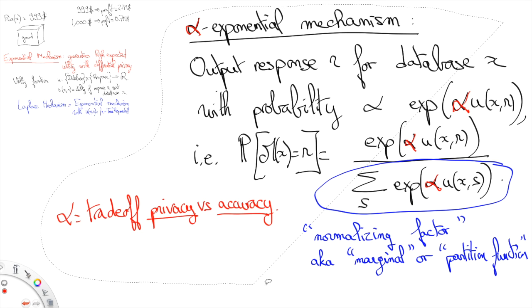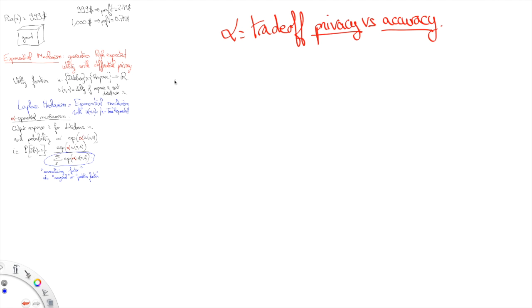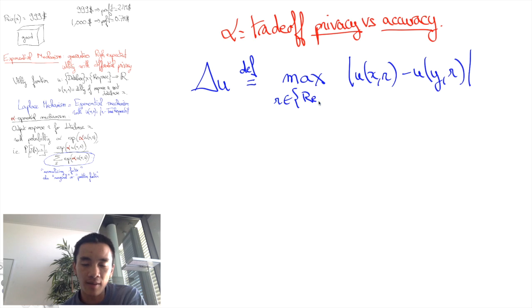More explicitly, let's define delta u to be the maximum of differences of utilities between neighbor databases x and y. And we also demand that this hold for all possible responses r.